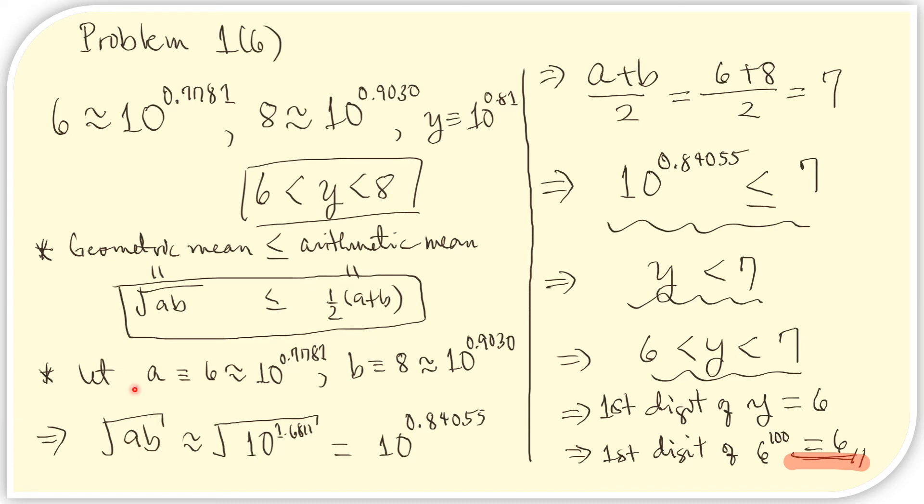First is the geometric mean. We replace a with the approximation here, and b with this approximation. If we get the product, we get this. And if we get the square root of that, this is what we obtain. Now, let us look at the arithmetic mean. That is just the average of 6 and 8, the middle number, which we know to be 7. Or if we use the formula, we still get 7.